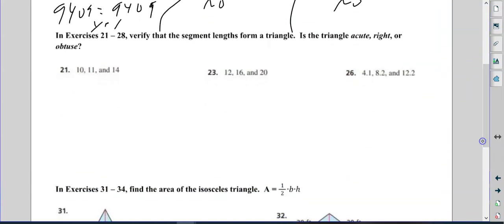Alright, verify the segment lengths form a triangle and then is it acute, right, or obtuse. So again, my biggest number, biggest number, biggest number. 10 squared plus 11 squared something 14 squared. So I'm just going to type in my calculator in one fell swoop: 10 squared, which we know is 100, plus 11 squared, 121, that's 221. And then 14 squared is 196.